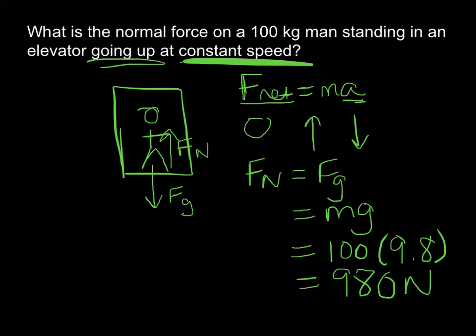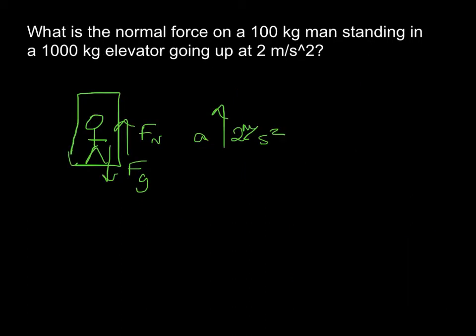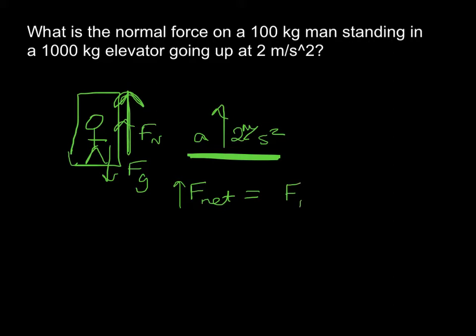It's not always that easy. Next situation: we want to know what the normal force on the man is if he's going up in his elevator at 2 meters per second squared. Our net force is what we see, so this acceleration is part of our net force. Since our acceleration is in the upward direction, that tells us our normal force is larger than our gravitational force. Our two forces are in opposite directions, so opposite signs — instead of adding, you're subtracting.